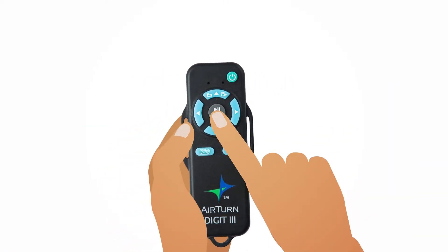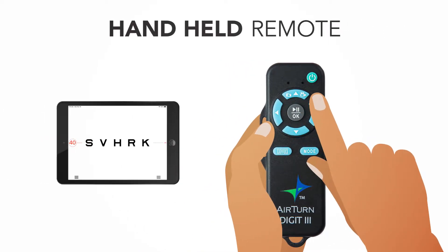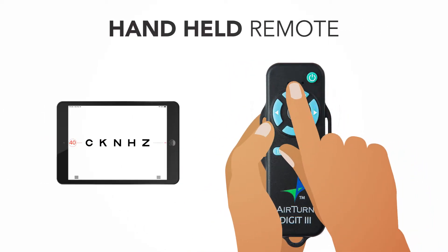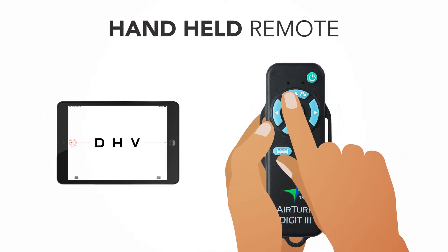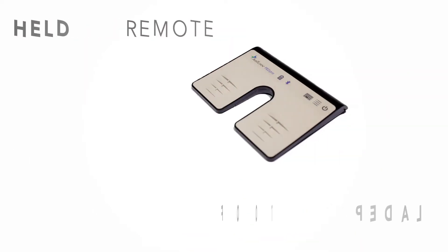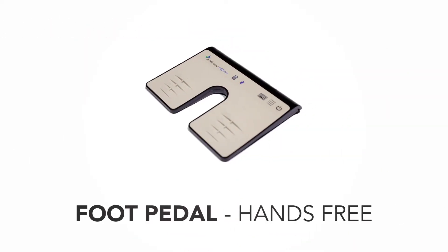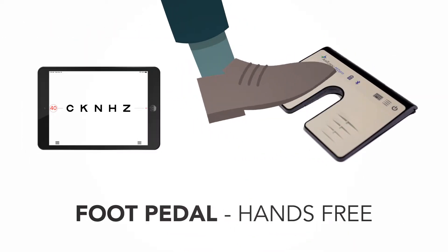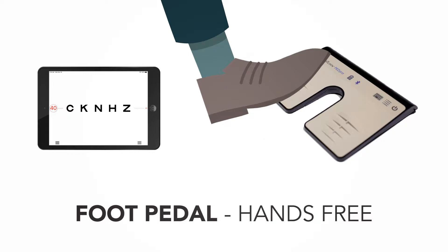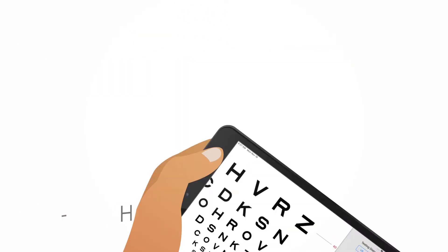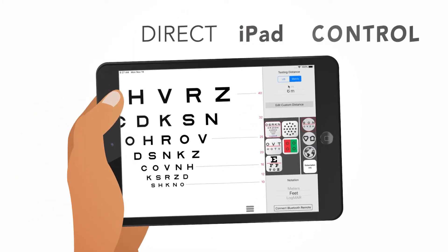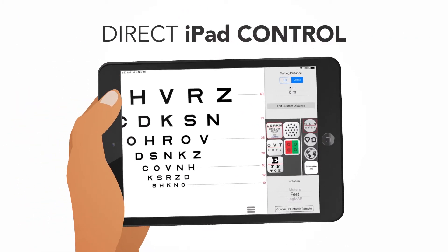The Bluetooth handheld remote is minimalistic and allows full control of all the features. Use a foot pedal to change the size of the line displayed or to randomize the letters. You can also use taps and gestures directly on the iPad.